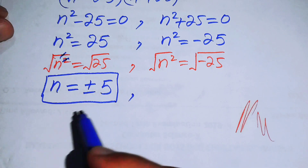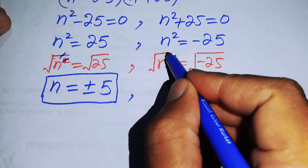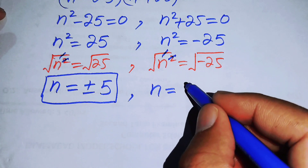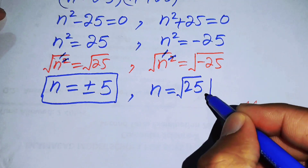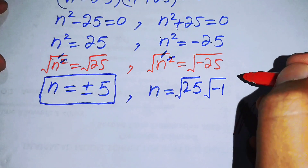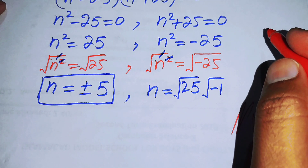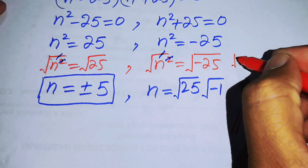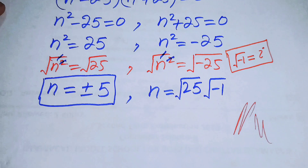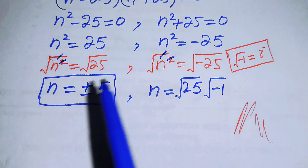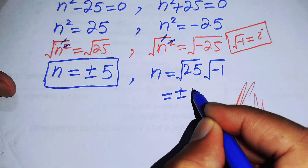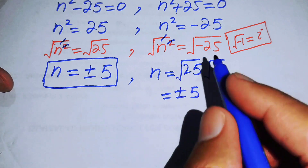Now to find the other roots, we solve the second case. Taking the square root of both sides of n squared equals minus 25, we separate it as the square root of 25 times the square root of minus 1. When we have a negative sign under the square root, we write it using iota, since the square root of minus 1 equals iota. So n equals plus or minus 5 iota.